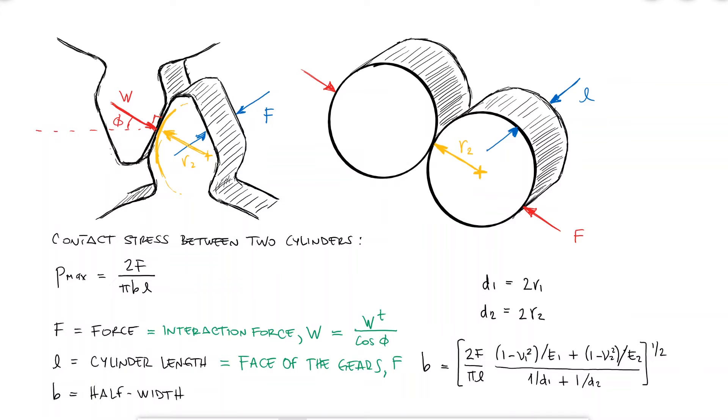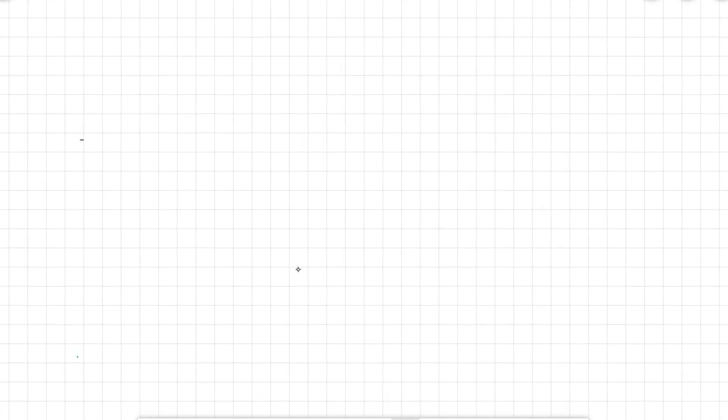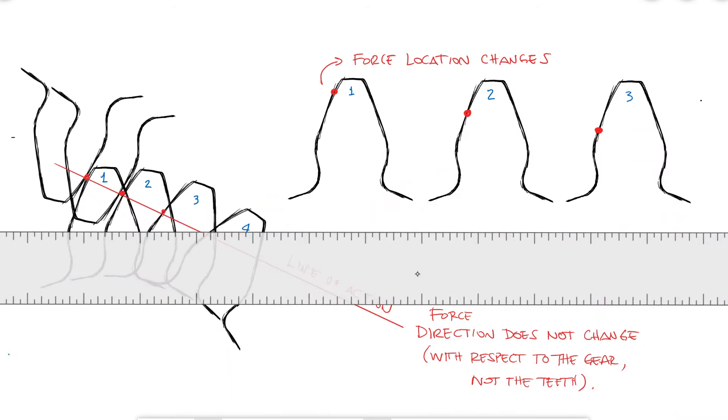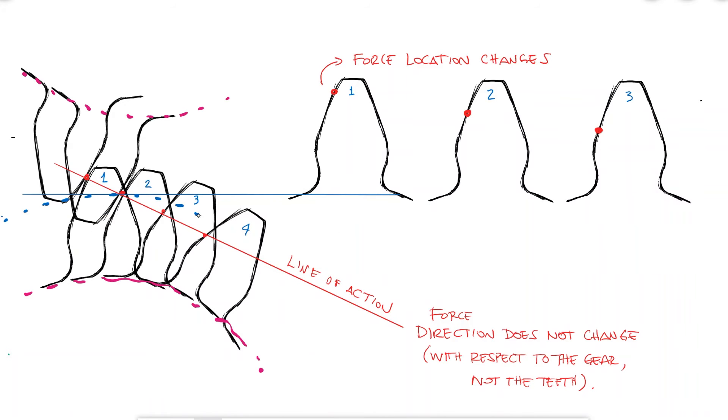Now, this value might change as gears rotate, because even though the direction of the force with respect to the gears will not change during rotation, in other words, it always forms a pressure angle with respect to the tangent line at the pitch circle, the location with respect to the tooth does change.